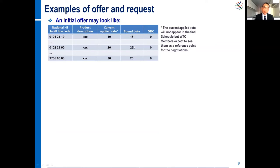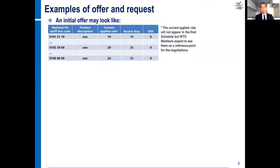Very often the acceding member, together with their offer, would present their current applied rate. If they don't, most of the time WTO members will ask them to provide their applied rates. In that simple example, you can see for the first product 01012110, the applied rate is 10% and the acceding member offers to commit itself not to exceed 15%. For the last product, the current applied rate is 20% and the offer is 25%.